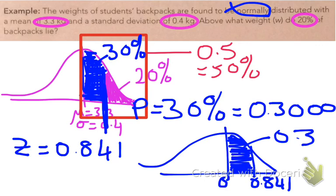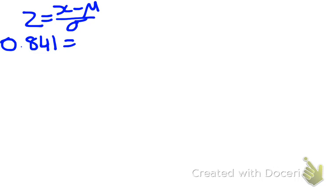Now I need to work backwards to find out what the x-value is. If we think we've got our formula, z equals x minus the mean over our standard deviation, I've now found that z-value, so I'm going to substitute that in, 0.841. I don't know what the x is, because that's what I need to solve, but I do know that the mean is 3.3 kilos, and my standard deviation is 0.4 kilos.